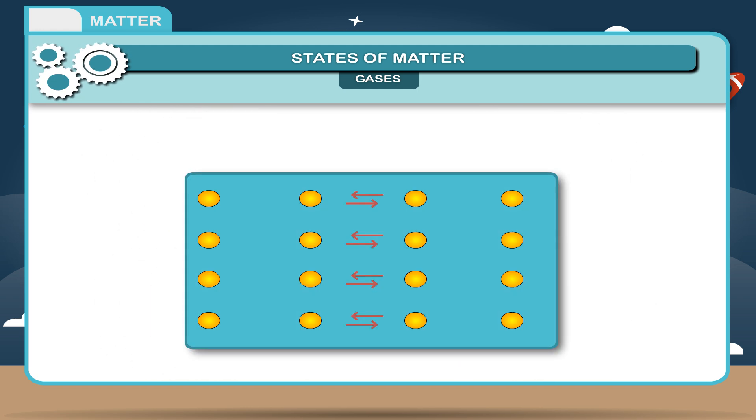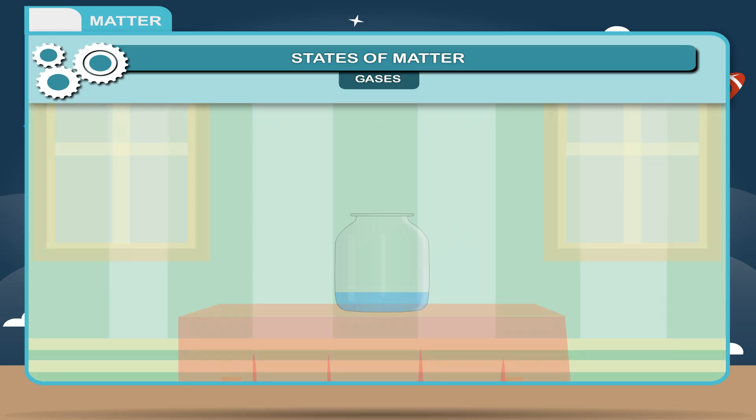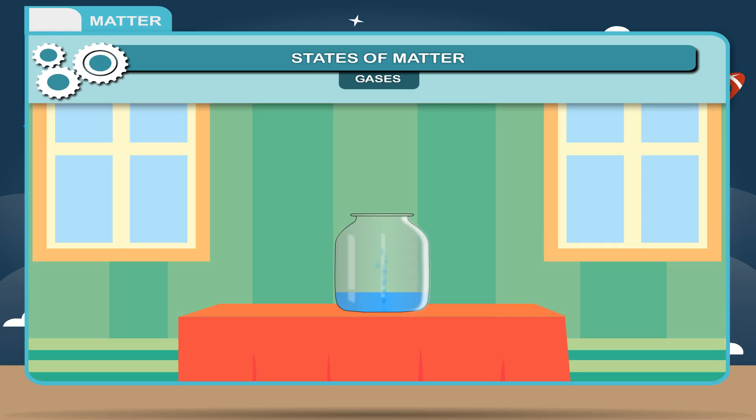Any substance which has neither definite shape nor definite volume is known as gas. In a gas, the forces of attraction between the molecules are very weak and can be broken very easily by atmospheric conditions.